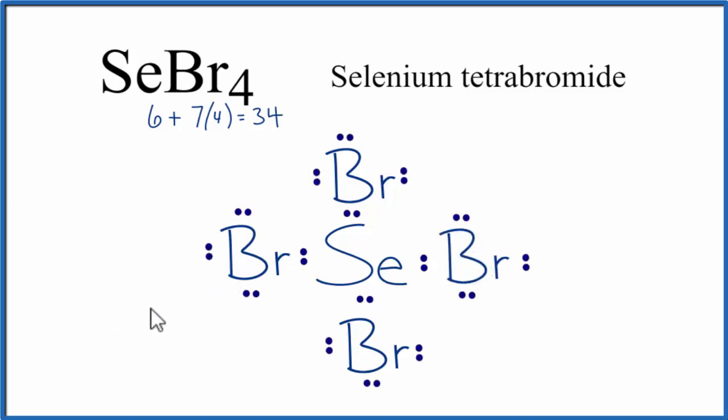At this point, we've used 32 valence electrons, and we have 34. But all the atoms have octets. So we're trying to figure out where we can place those last two valence electrons.